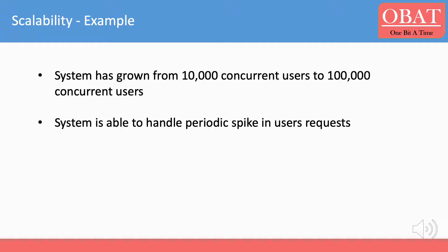Scalability is needed if a system has grown from 10,000 concurrent users to 100,000 concurrent users, or if the system should be able to handle periodic spikes in user requests.